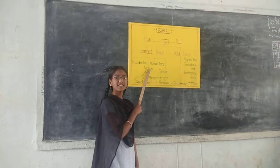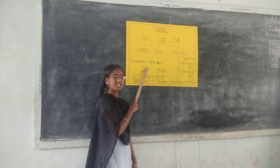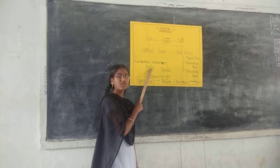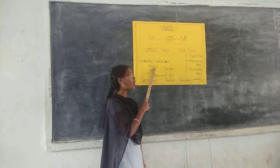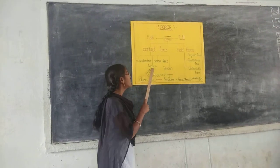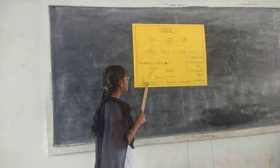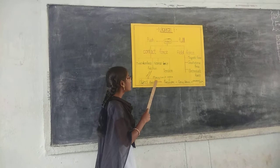Friction: the resistance to the movement of a body over a surface is called friction. Friction depends on an object's area.